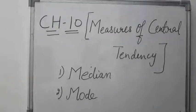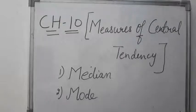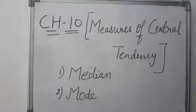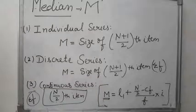Median and mode are the most important positional averages. These are called positional averages because their value is worked out on the basis of their position in the statistical series. First of all, we will discuss about the median. Median is a centrally located value of a series, indicated by capital M.